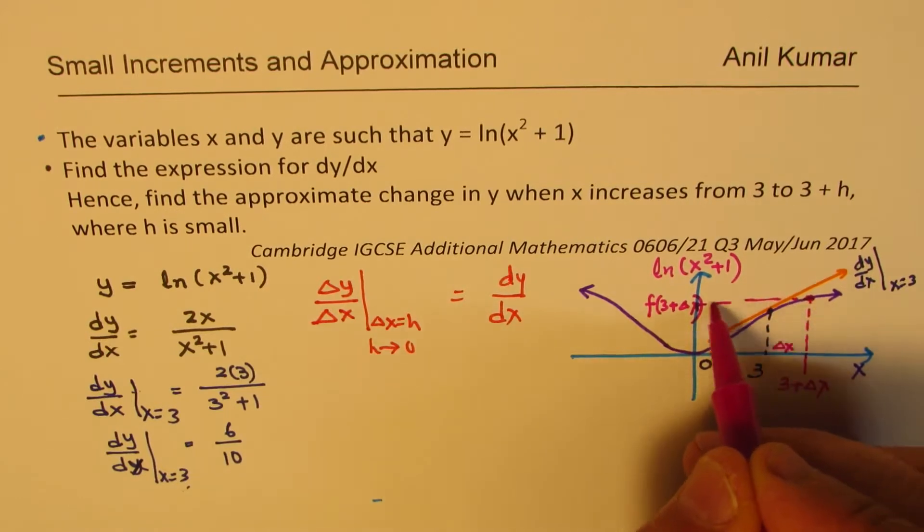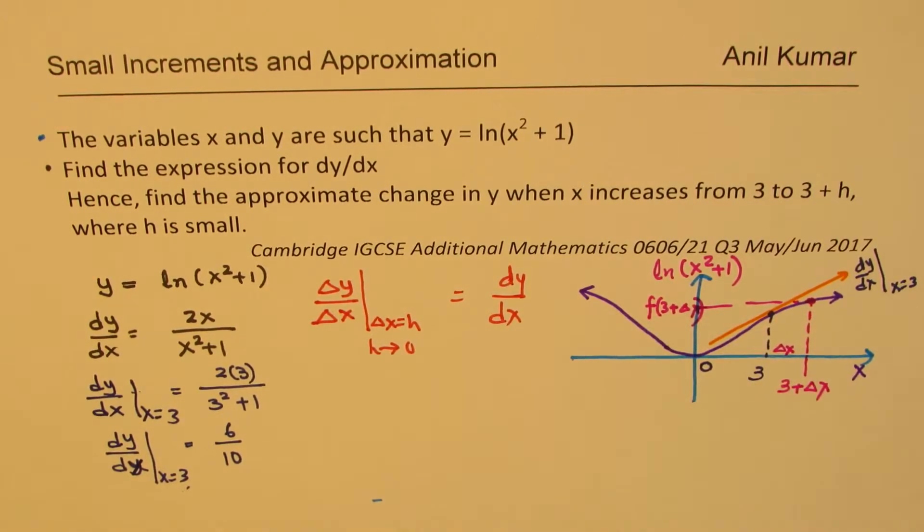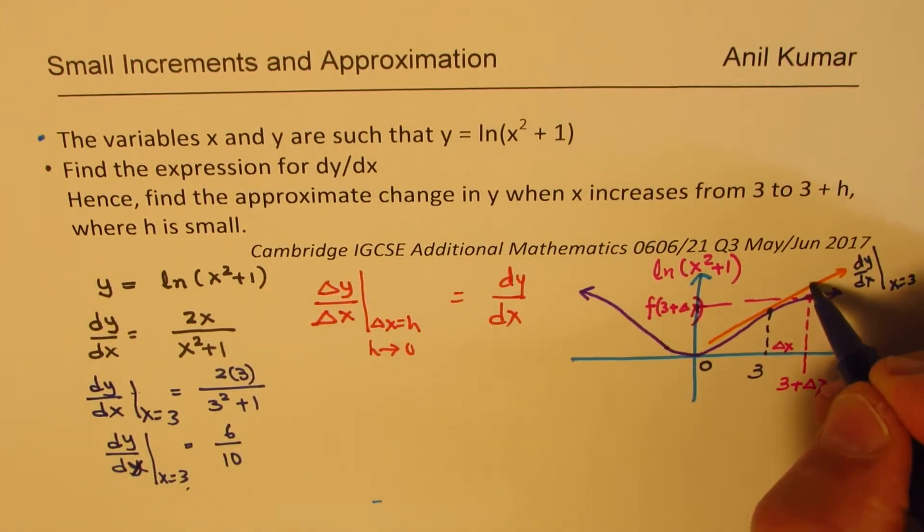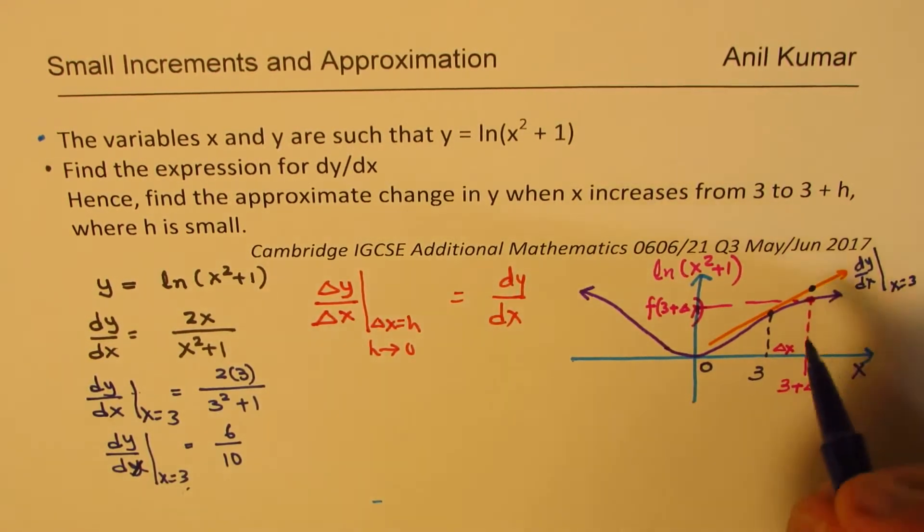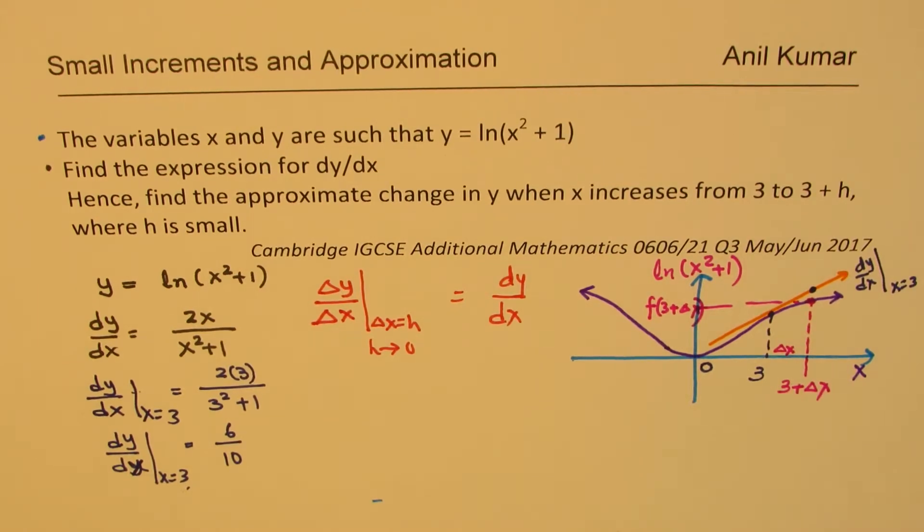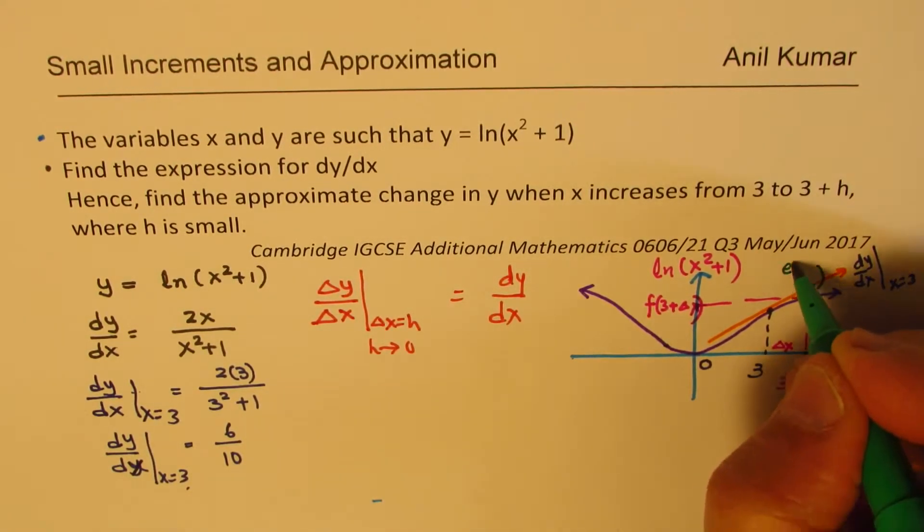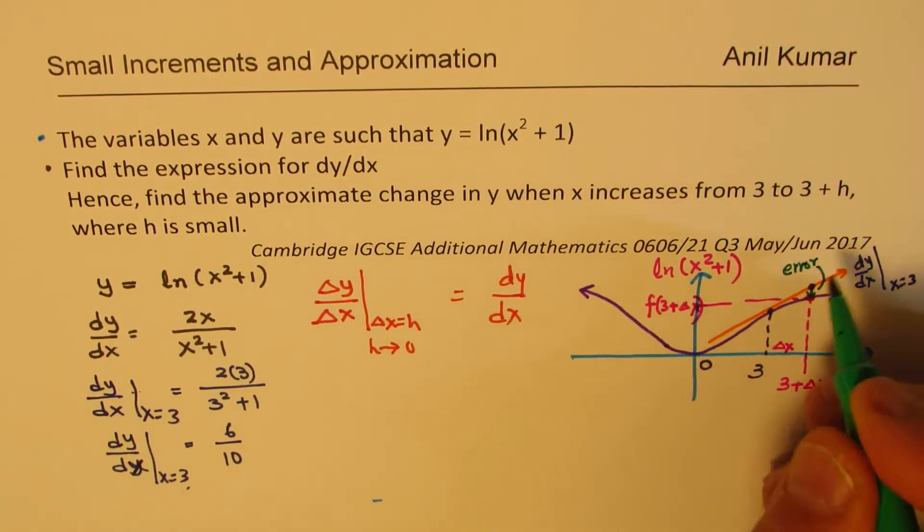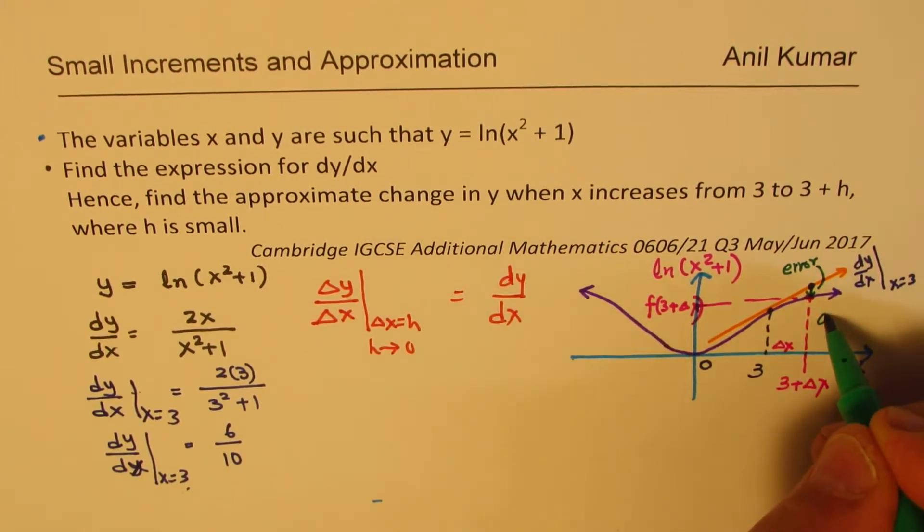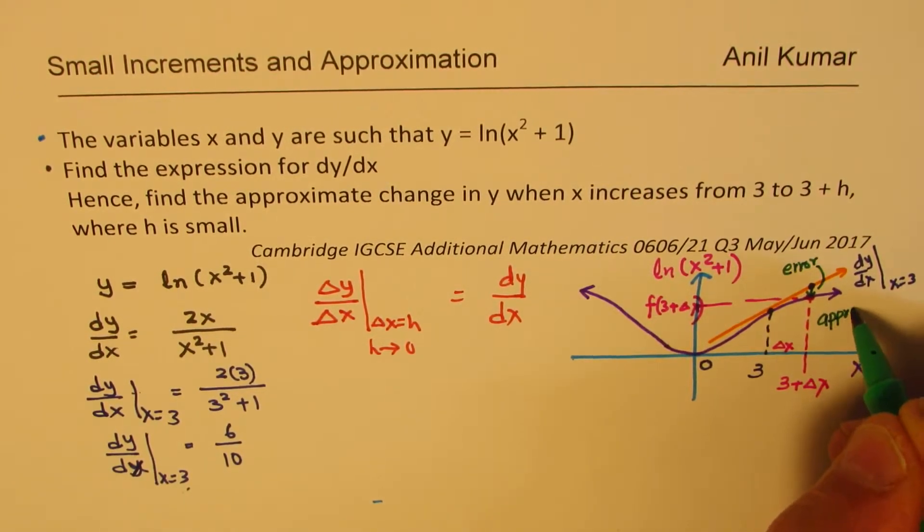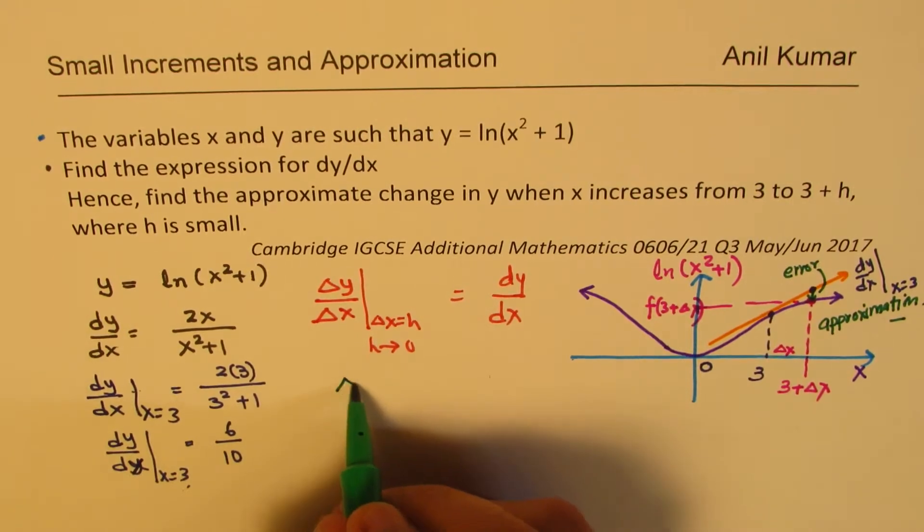The actual value here will be this, which is f(3 + delta x). That's the exact value. But what we do in approximation is that we actually consider the point on dy/dx, and that leads to an error. In this case, the error will be that much. This is the error.